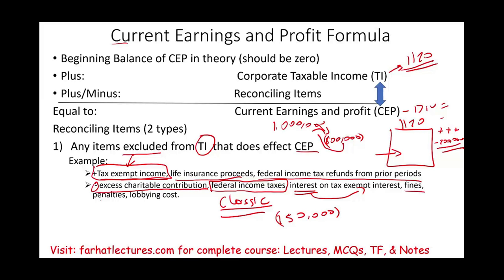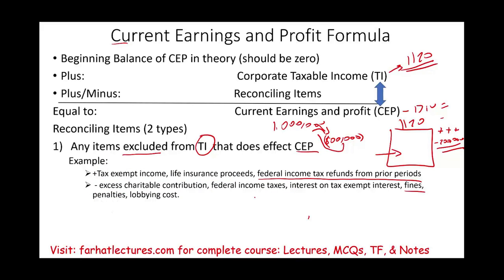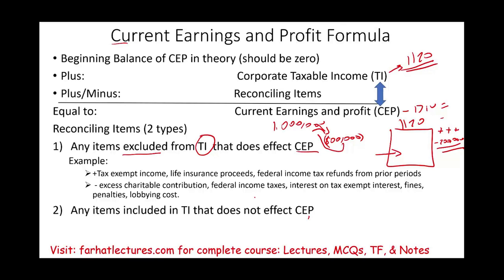Fines, penalties, and lobbying costs are real payments you make — you wrote checks for them — but you cannot deduct them on your 1120. Therefore they reduce your dividend-paying capacity and are deducted when computing CEP. Second, items included in taxable income that do NOT affect CEP — for example, the dividends-received deduction (DRD). The DRD reduced your taxable income, but you didn't pay anything for it — it was given by the government. Therefore you add back the DRD to taxable income when computing CEP.